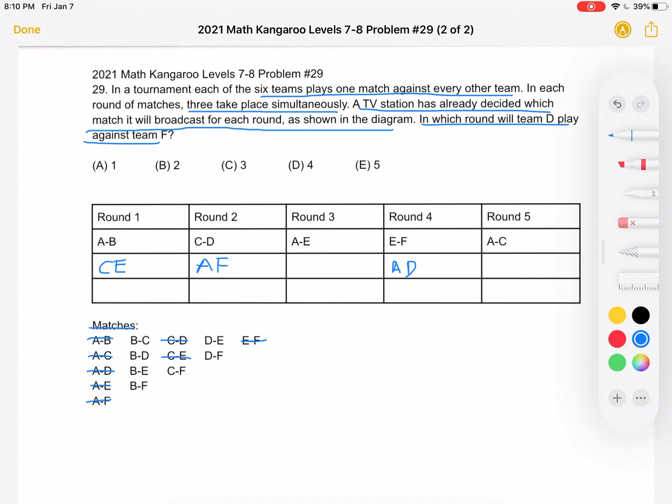And at this point, we can kind of figure out our answer because we're trying to figure out where team D plays against team F. And keep in mind that in each round, we have all six teams represented. So that means for round one, if we have A,B and C,E already playing, what two teams are left? Well, D,F are the teams left. So we already know our answer, but let's just keep going just to show what happens for the rest of the table. But if you wanted to, you could finish right now.